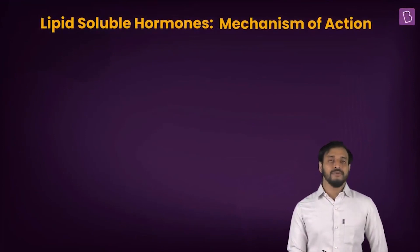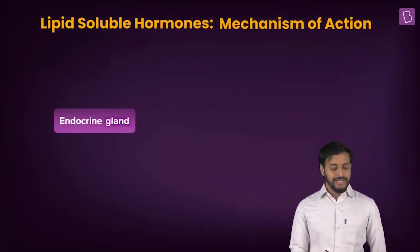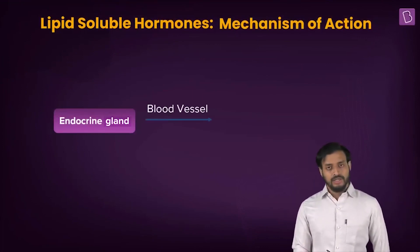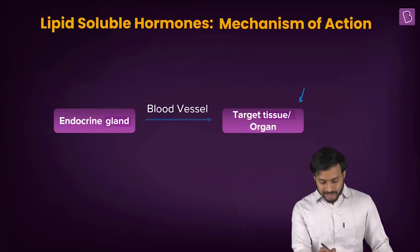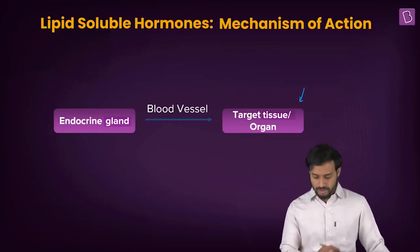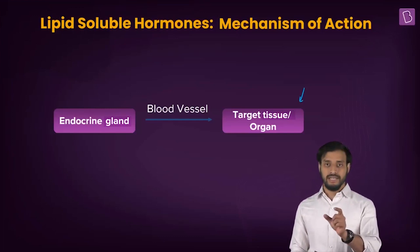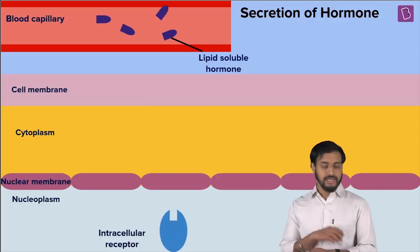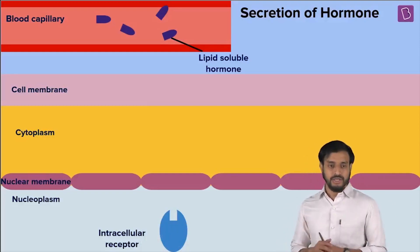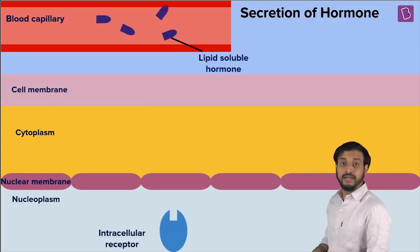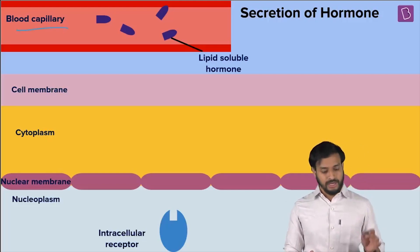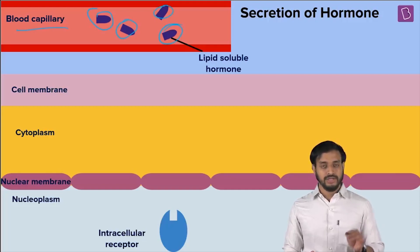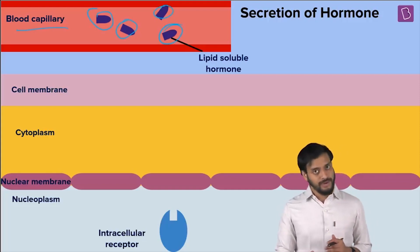Now, talking about the mechanism of action for the lipid soluble hormones — the endocrine gland secretions will be put into the blood. Through the blood, it will reach the target cells, target tissues, or organs. Endocrine glands are ductless glands. This is a schematic, a very simplistic representation. At the top you can see the blood capillaries, and these are the lipid soluble hormones traveling through the blood.